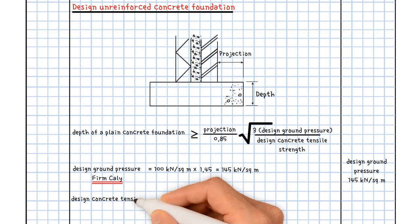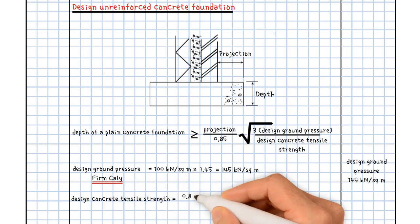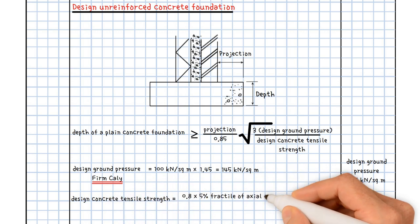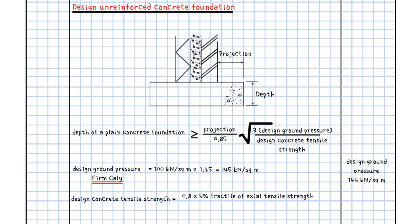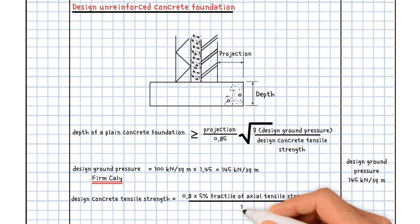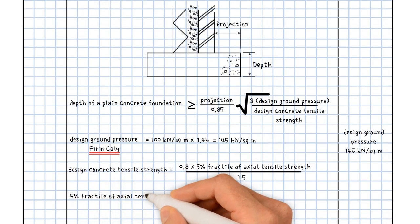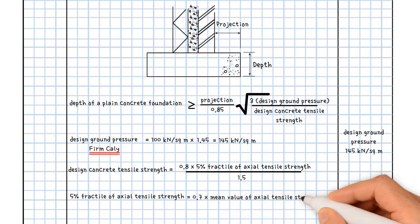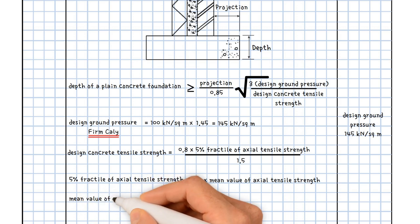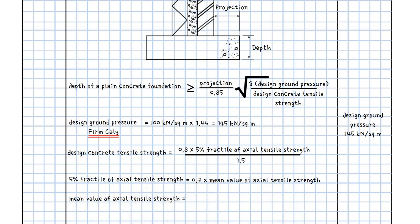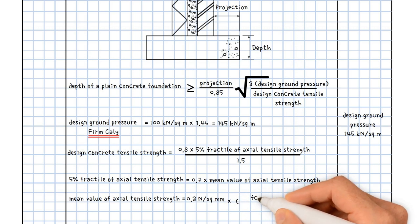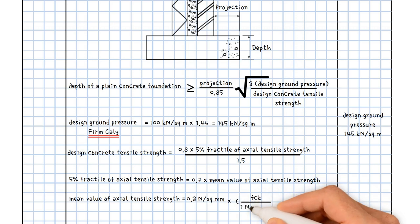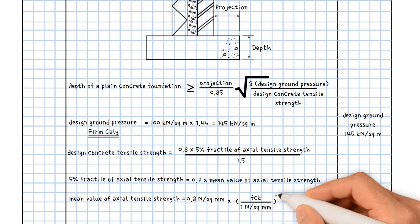The design value of concrete tensile strength equals 0.8 times the 5% fractile of axial tensile strength, divided by the partial factor for concrete of 1.5. The 5% fractile of axial tensile strength equals 0.7 times the mean value of axial tensile strength, where the mean value equals 0.3 N/mm² times the characteristic compressive cylinder strength divided by 1 N/mm², raised to the power of two-thirds.